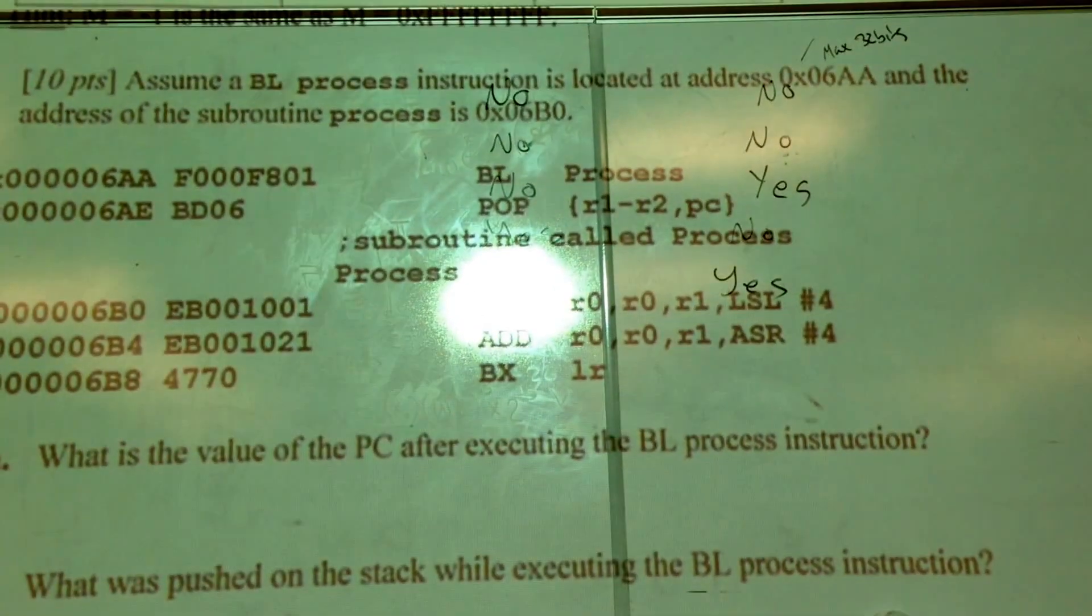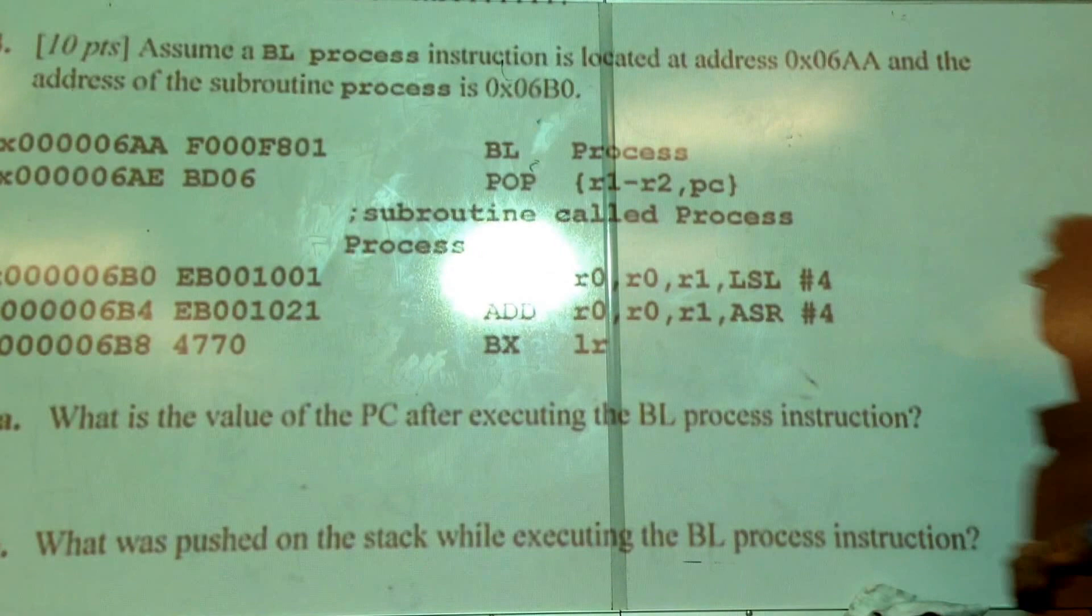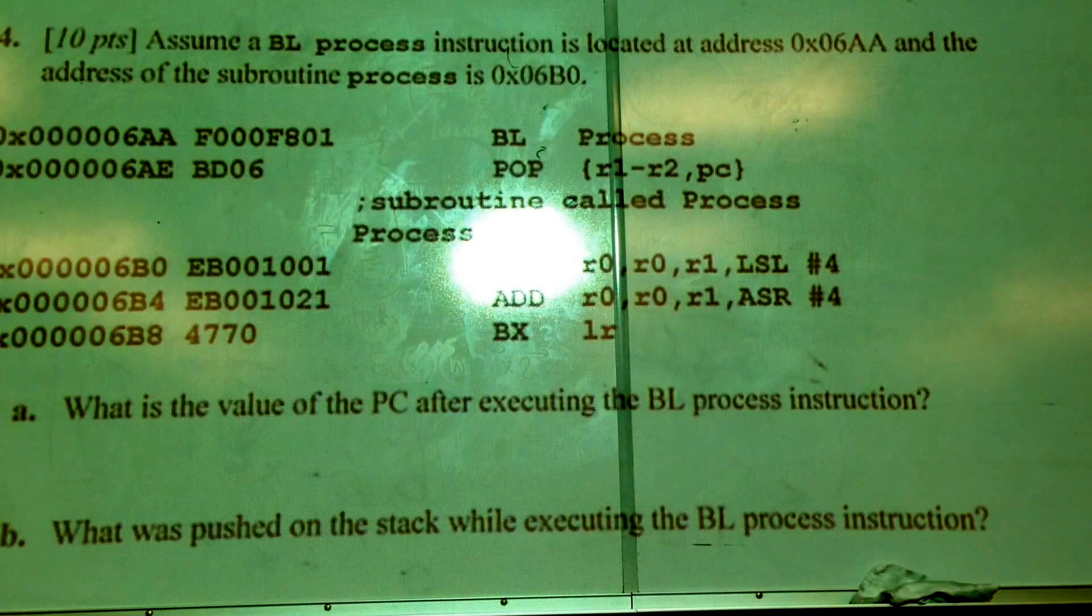Question 4. Assume we have BL process instruction located at address hex 06AA and the address of the subroutine process is 06B0.